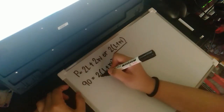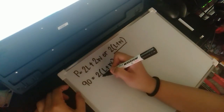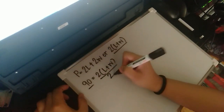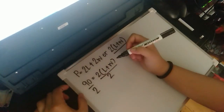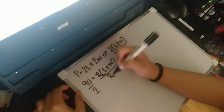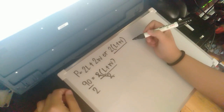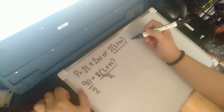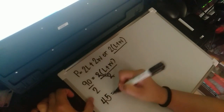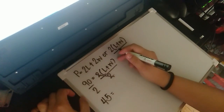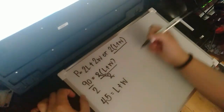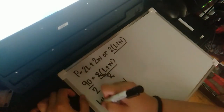Using the perimeter formula: 2 times the quantity length plus width equals 90. We need to eliminate the 2, so we divide both sides by 2. Two divided by two cancels, and 90 divided by 2 gives us 45. So length plus width equals 45. Since L plus W gives us a sum operation, we can consider this value as the sum of the roots.